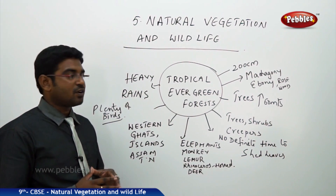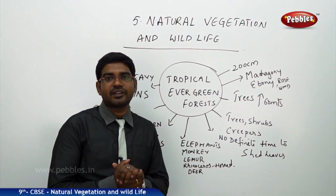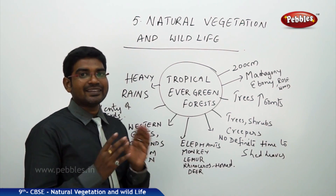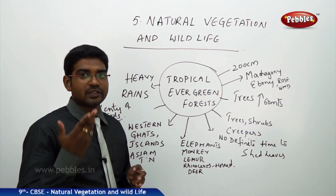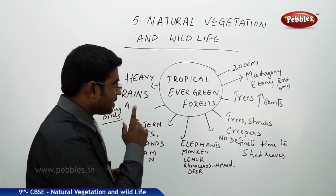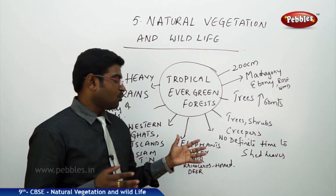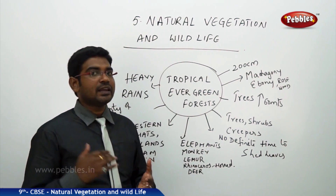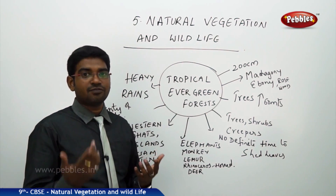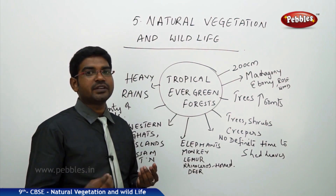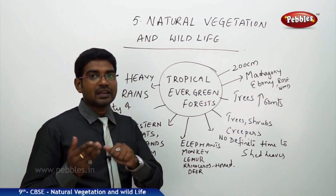Many types of monkeys are also found in this forest. The forest is known as evergreen because the trees do not shed their leaves. Generally, plants have a tendency of shedding their leaves at a particular season, but here the tropical evergreen forest has no definite time when the trees shed their leaves. That is why there is almost always a completely green cover in the forest.